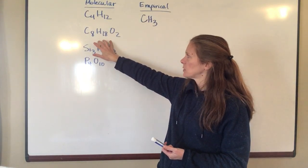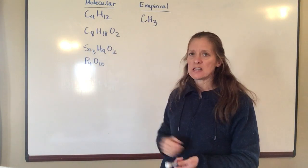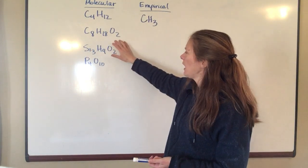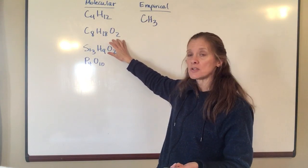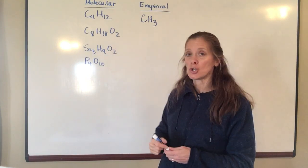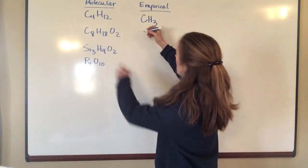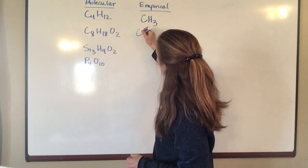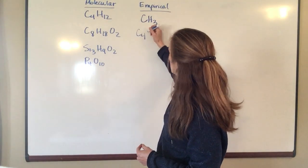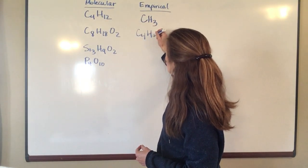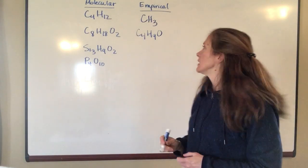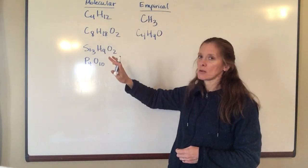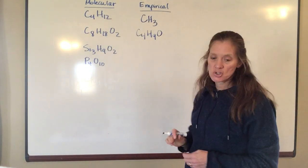Okay let's look at this next one. I've got C8H18O2. Well this one hopefully is a little more obvious that the thing that you're going to divide through all of these by is 2. So 8 divided by 2 is 4. 18 divided by 2 is 9 and 2 divided by 2 is 1. So the empirical formula for this molecular formula is C4H9O.